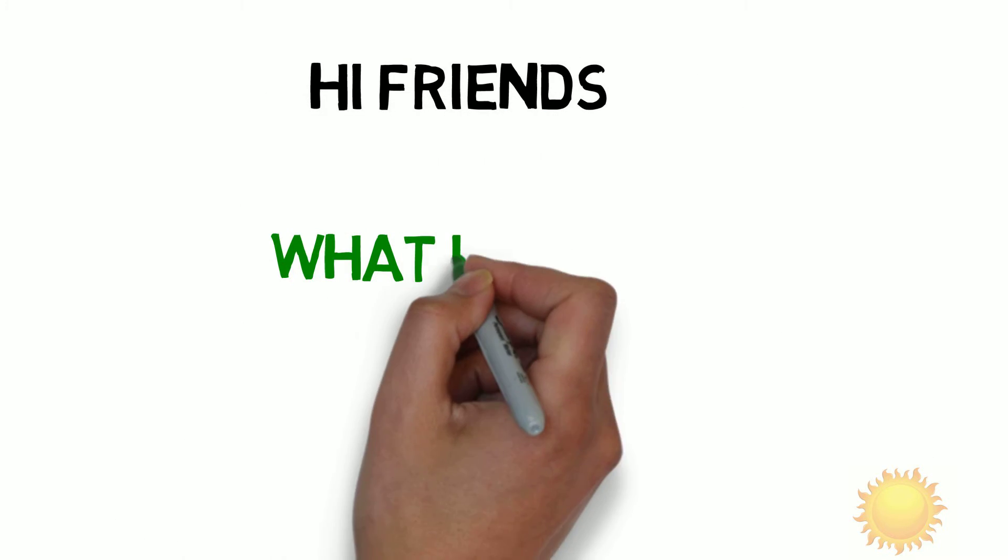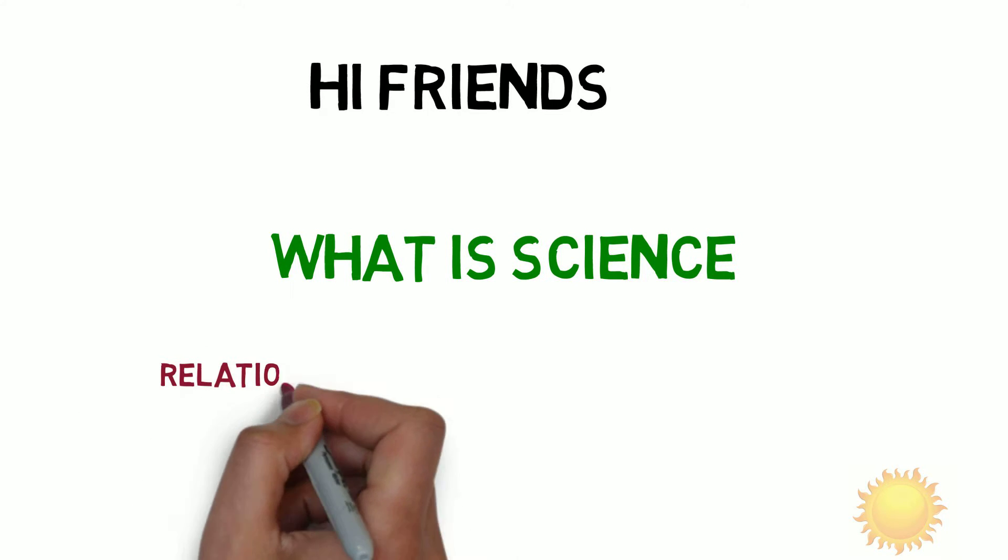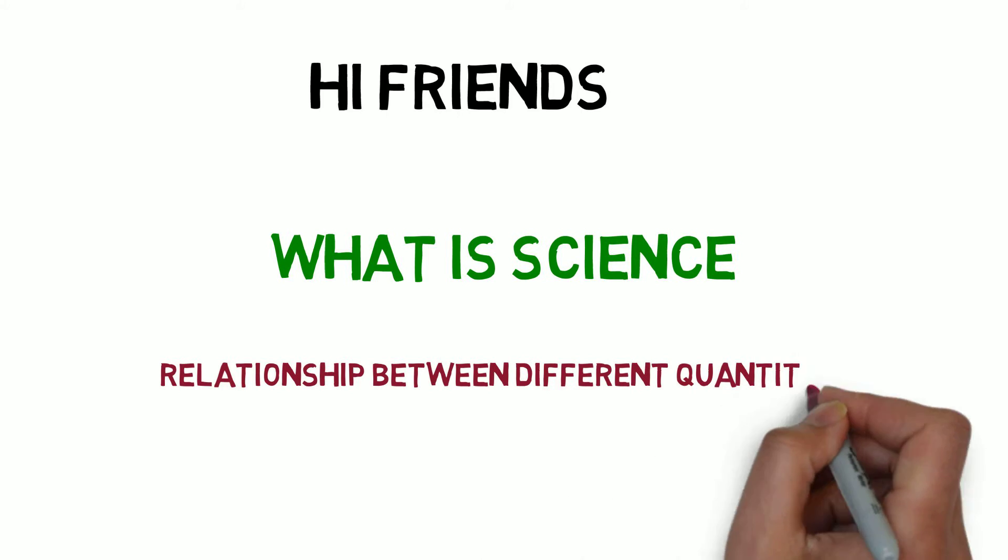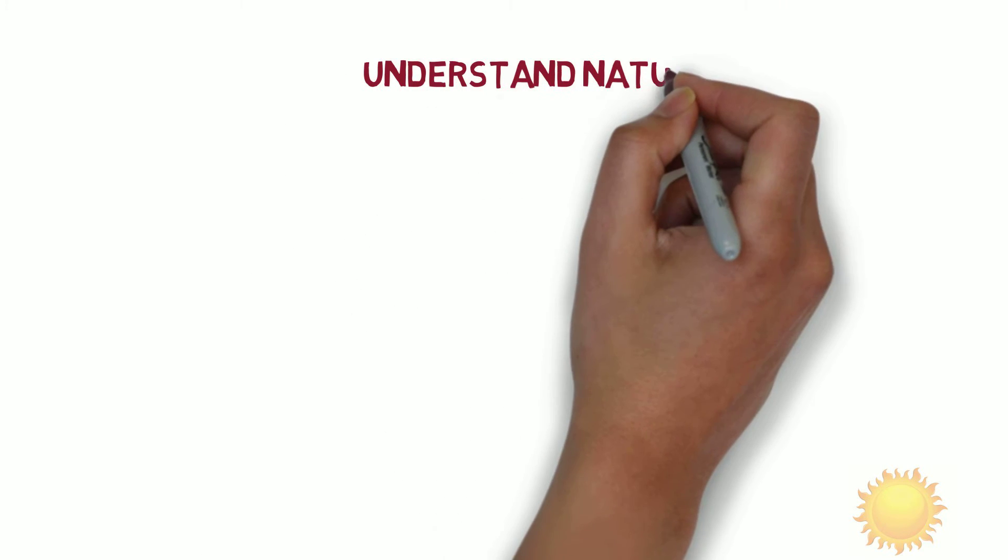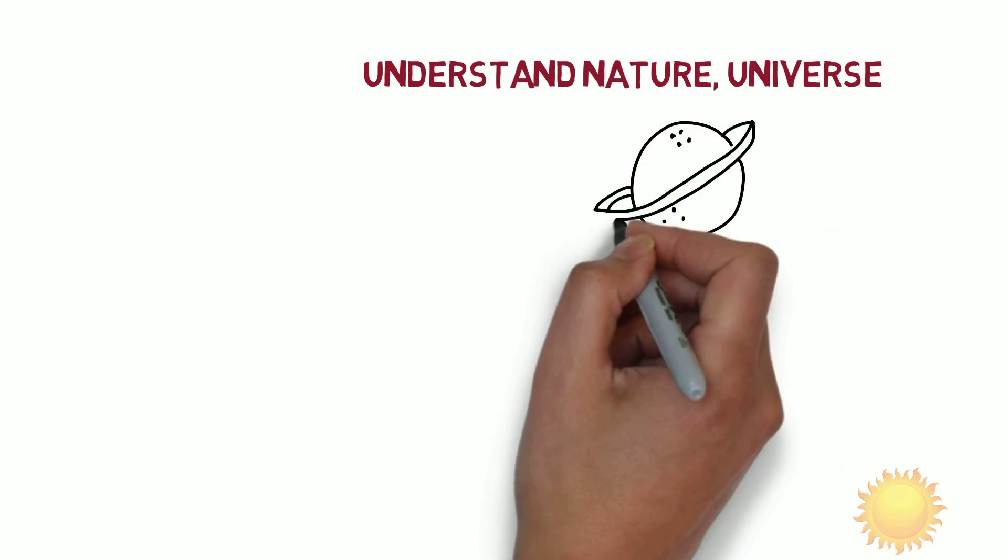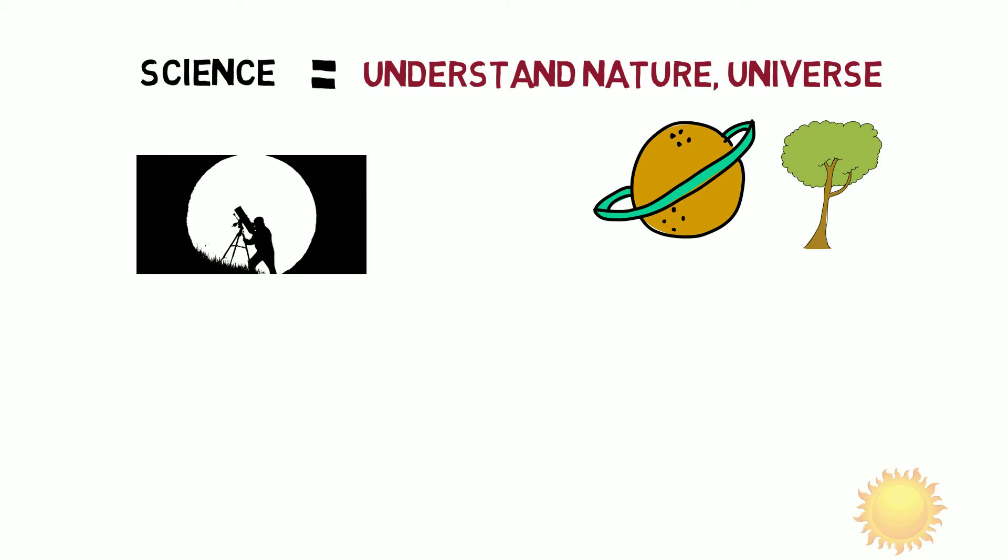Hi friends, what is science? We can look at science from a lot of different perspectives. One way to look at science is as finding the relationship between different quantities. Since we started the systematic study to understand nature, the universe, and its behavior, which we call science, scientists observe different quantities.